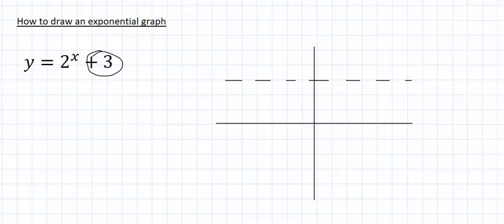And then the next thing would be to just look at this value over here. Because it's bigger than 1, we know that it's an increasing graph, and it's going to go above the asymptote like that.